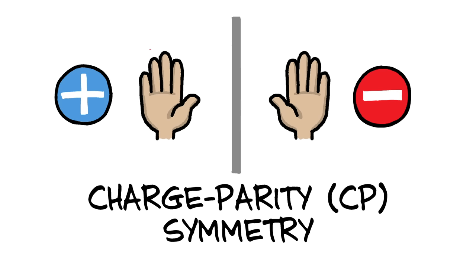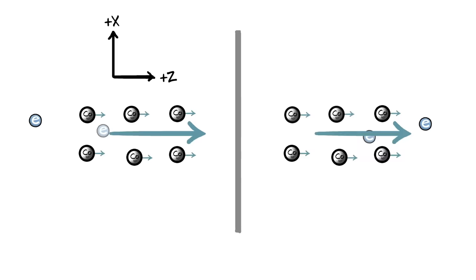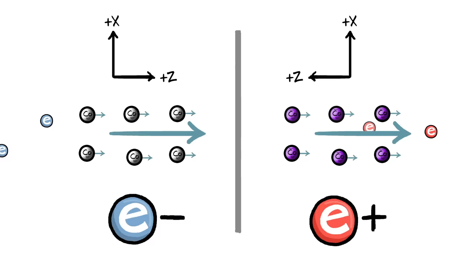The idea was if the mirror flipped not only these axes, but it also swapped the particles for anti-particles with their charges reversed. Well, then the symmetry would be restored, and the mathematics behind our laws of physics would still work.